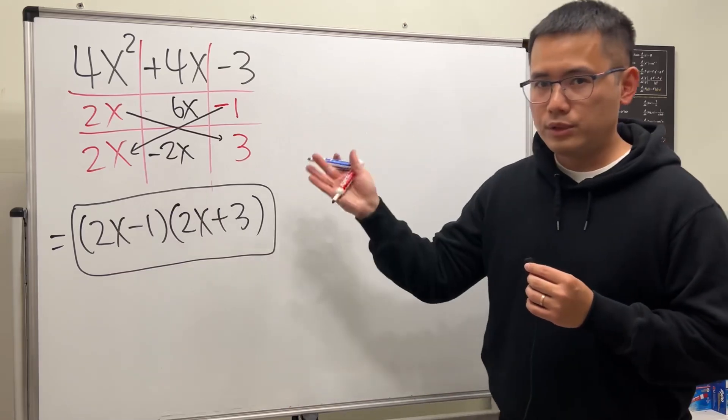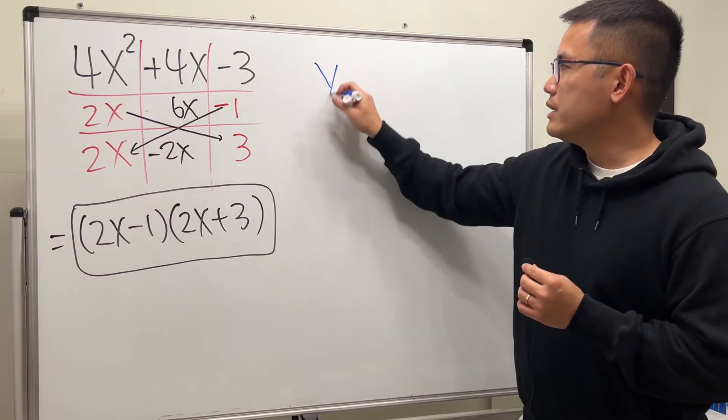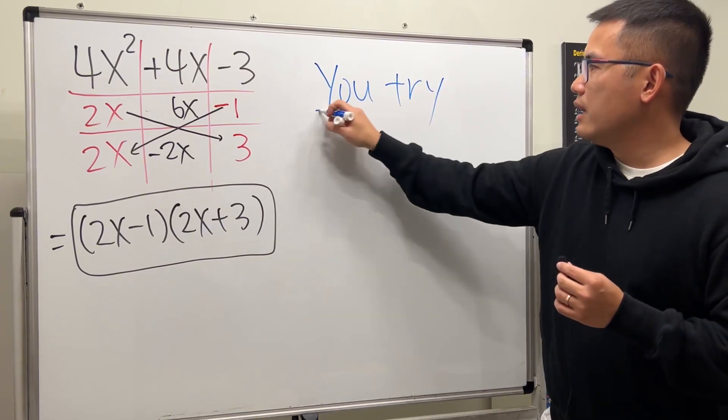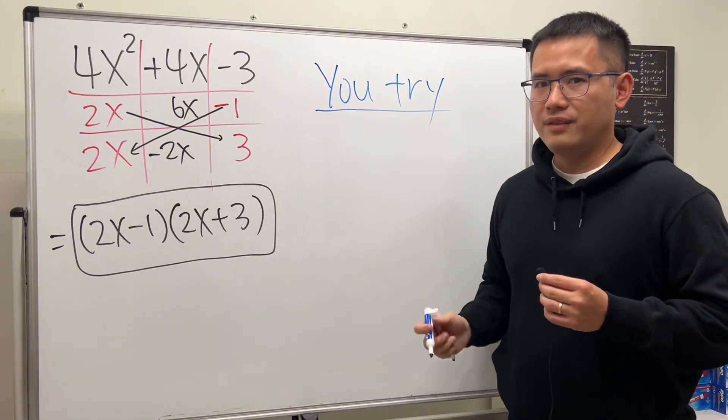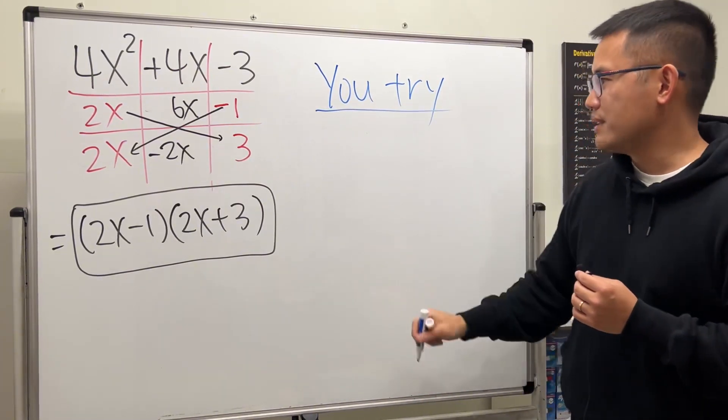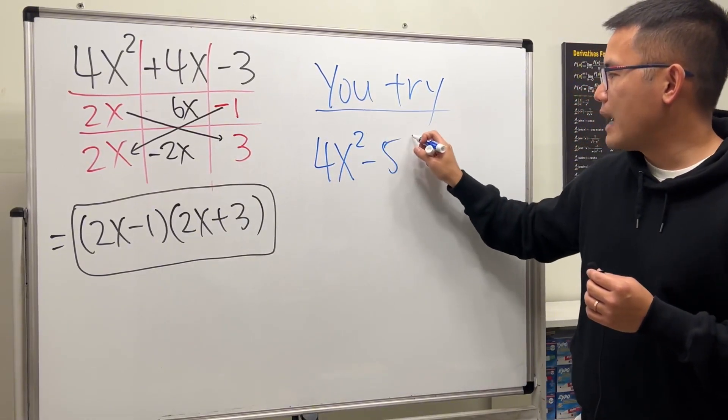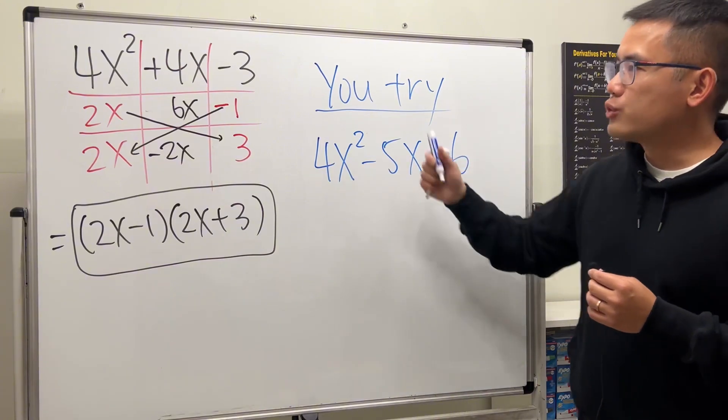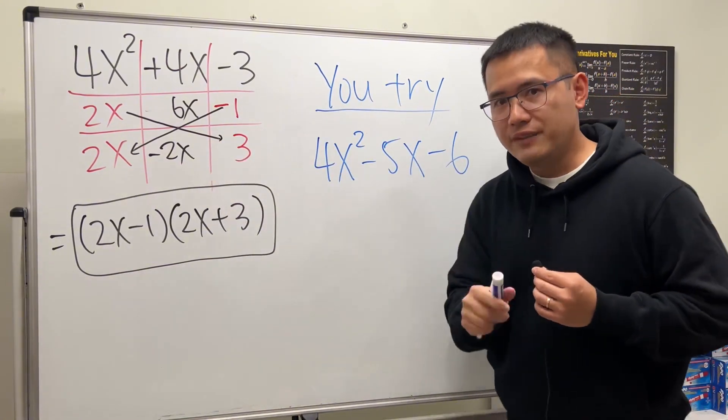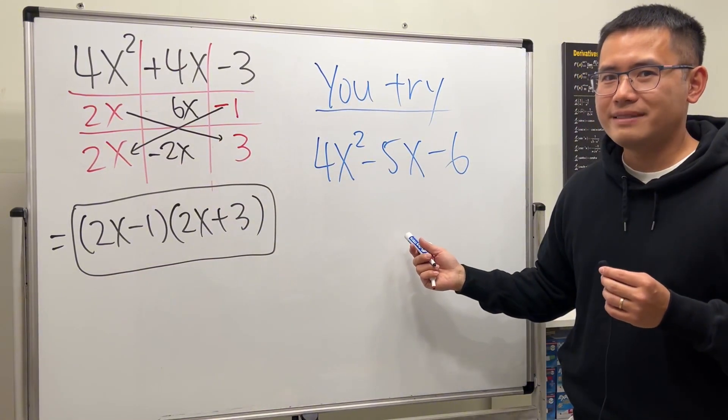So here is a question for you guys to try, and if you need help I have another video for this right here. So go ahead and try this. Let's go ahead and factor 4x² minus 5x minus 6 and try to use the tic-tac-toe method. Leave the answer down below and let me know what you guys get. That's it.